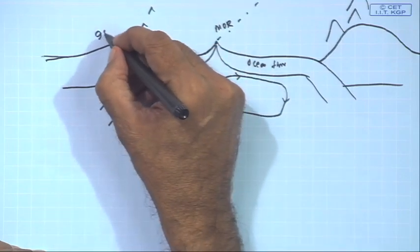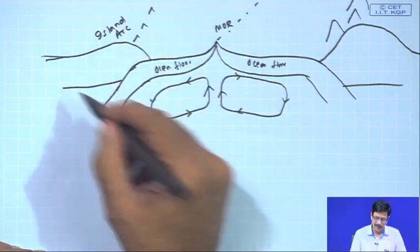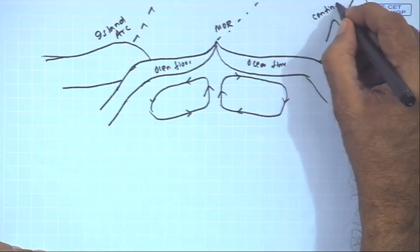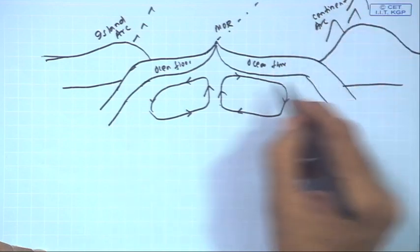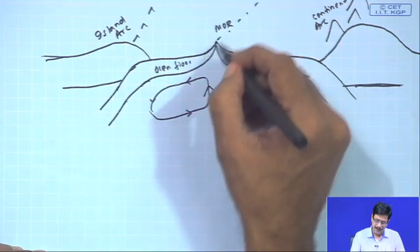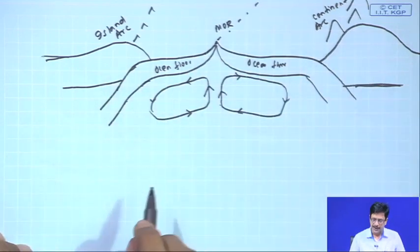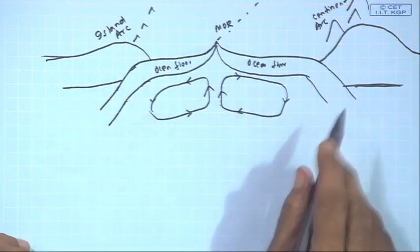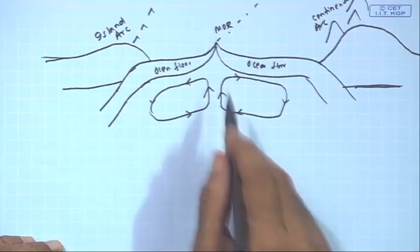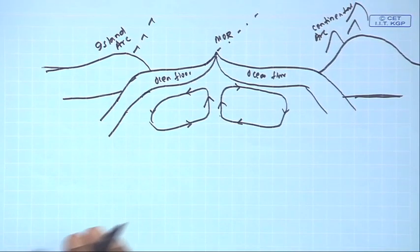These are the domains of the island arc, where an oceanic plate subducts against another oceanic plate. This domain is a continental arc, where an oceanic plate subducts against a continental lithospheric plate. And this is the mid-oceanic ridge. This is the broad framework of tectonic activity which we can explain in terms of the earth's heat engine at work, mainly driven by convection cells in the asthenosphere.